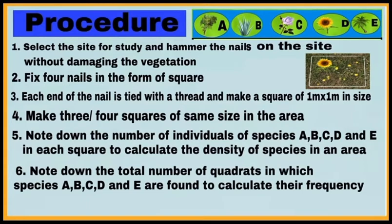Point number three: then make three or four more squares in the field in the same manner. Point number four: after making the squares or quadrats, count and note down the number of individuals of species A, B, C, D, and E in each square. This is done to calculate population density. Point number five: also note down the number of quadrats in which species A, B, C, D, and E are found. This is done to calculate the frequency.